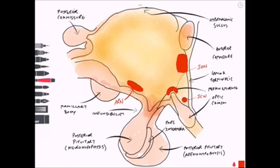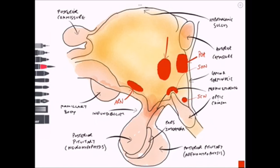We've got the ARN — the arcuate nucleus. We've also got the POA, which is the preoptic area, and the AHA — the anterior hypothalamic area.